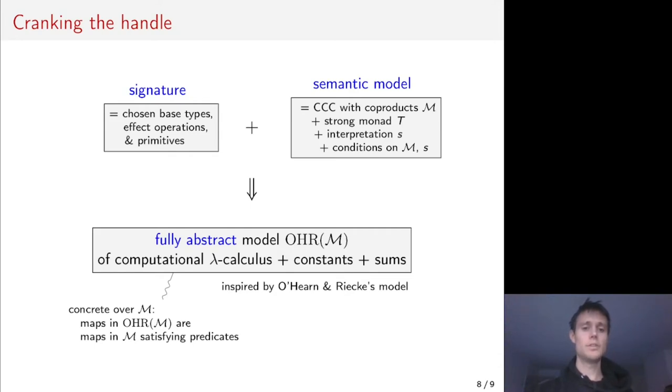In general, if you choose a signature of base types, effect operations, and primitives, together with a Cartesian closed category with coproducts, a strong monad, and an interpretation, plus some conditions on your category and on your interpretation of base types, effect operations, and primitives, then our construction will yield a fully abstract model of the computational lambda calculus with those chosen constants and with sum types.